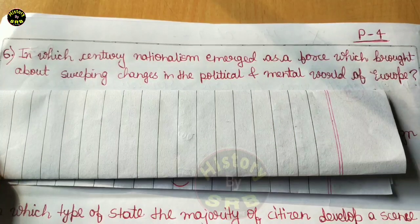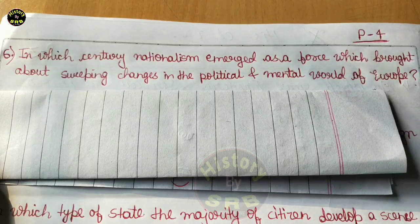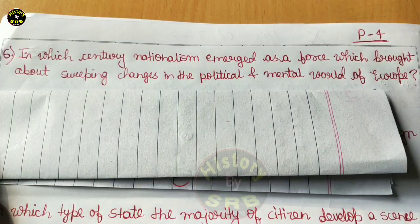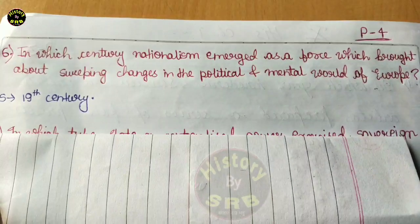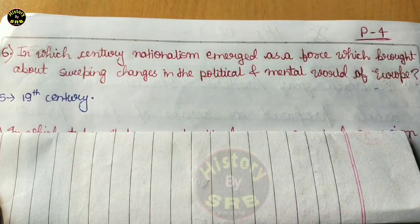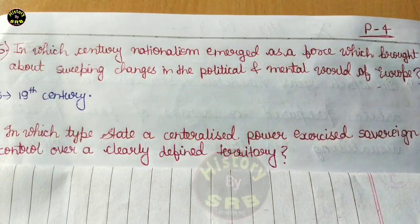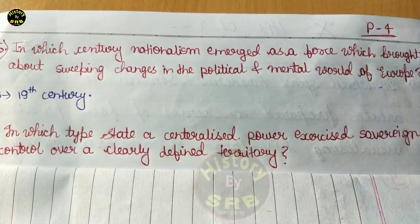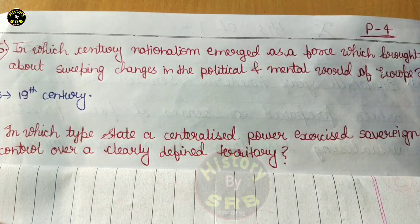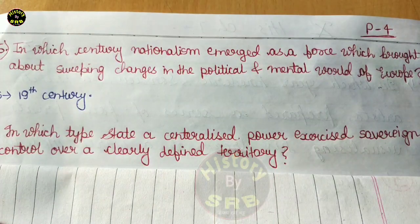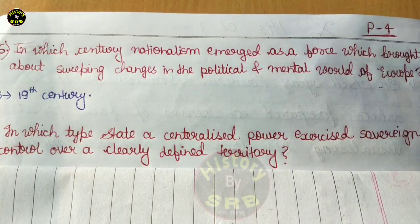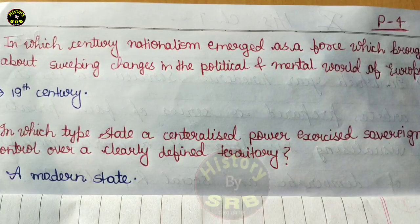Question number six: in which century did nationalism emerge as a force which brought about sweeping changes in the political and mental world of Europe? The correct answer is the 19th century. Question number seven: in which type of state is centralized power exercised over a clearly defined territory? The correct answer is a modern state.